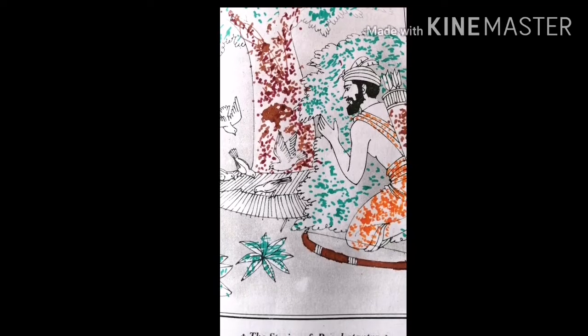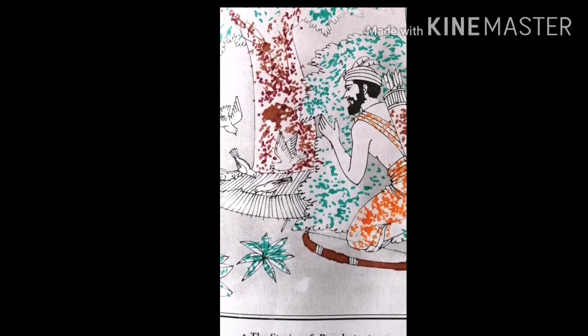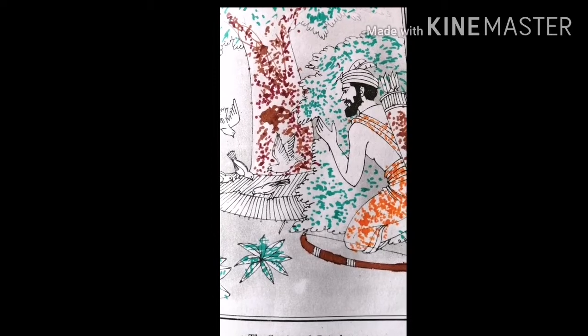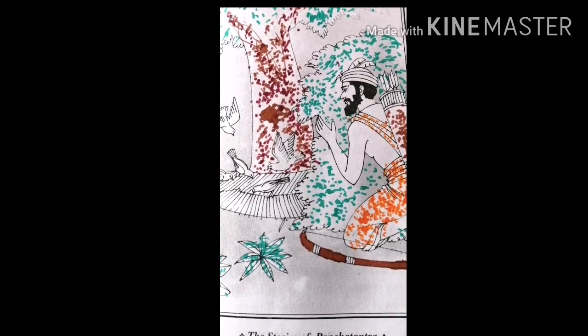A crow by name Lagupatanaka, living in the tree, saw it and was afraid. He flew up from that tree to a nearby tree and started watching the fowler.